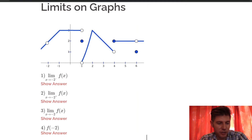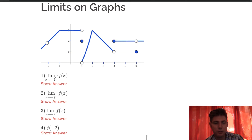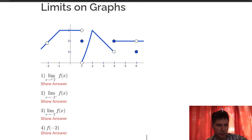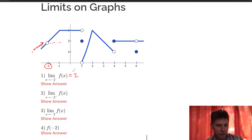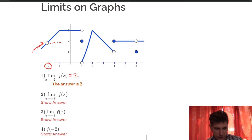Problems 1 through 4 use this graph here. Number 1 says the limit as x approaches negative 2 from the left — the minus sign means from the left. So here's negative 2, and we're going to approach it from the left. As we approach x equals negative 2 from the left, what is the y value we're approaching? We can see that answer is 2. We're approaching 2 as we go from the left.